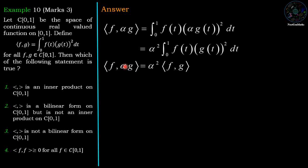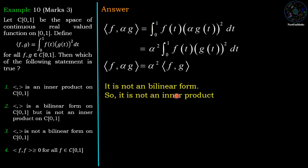So this product never becomes a bilinear form, and therefore it is also not an inner product. So the first option is wrong, the second option is wrong, and the third option is correct — which says that it is not a bilinear form on C[0,1]. Now we are going to check the fourth option.